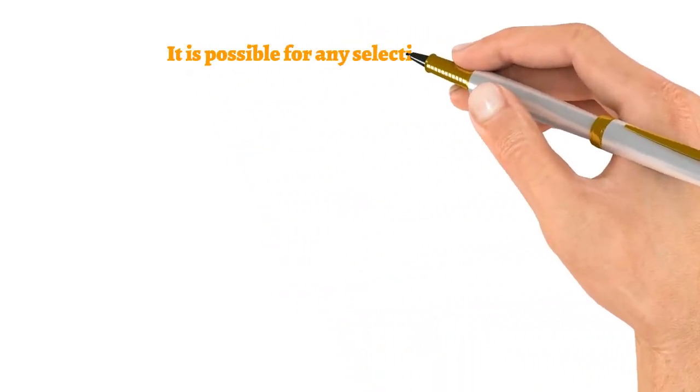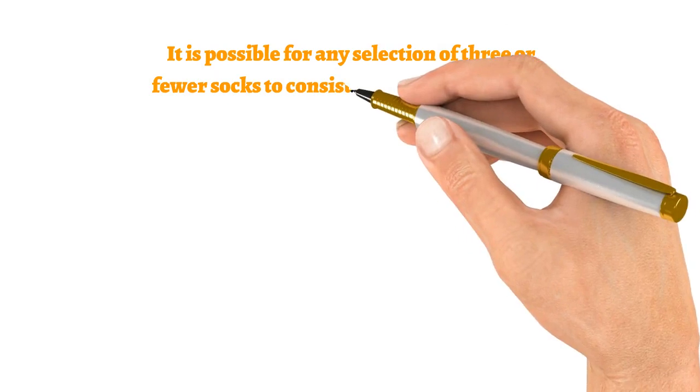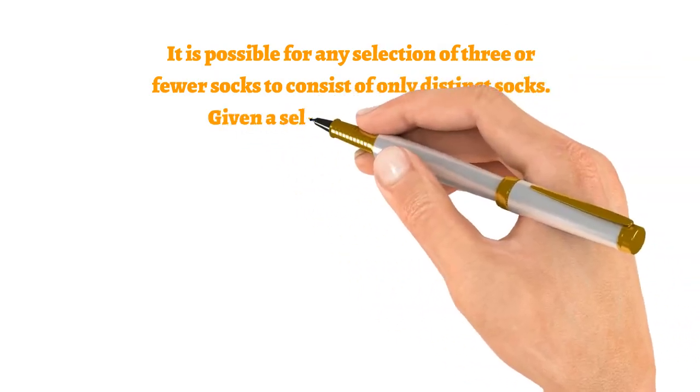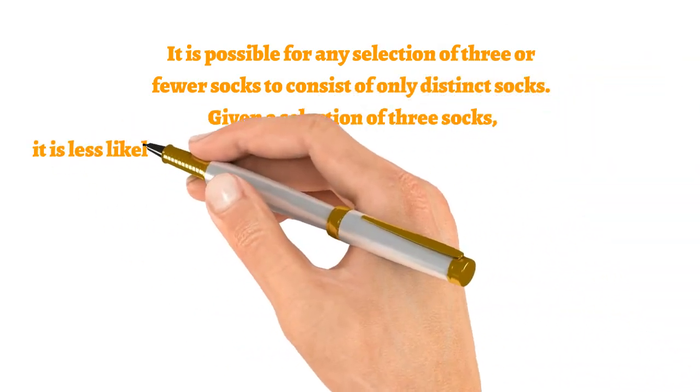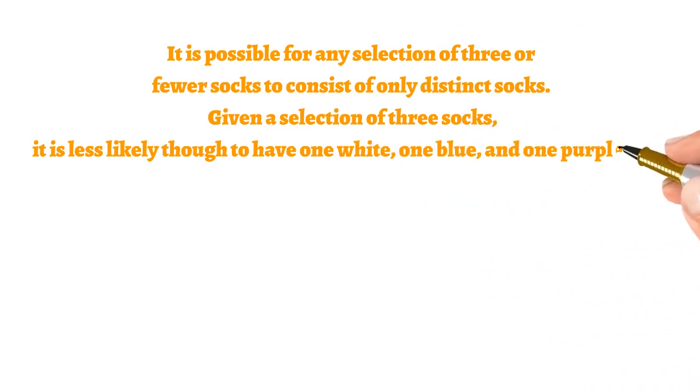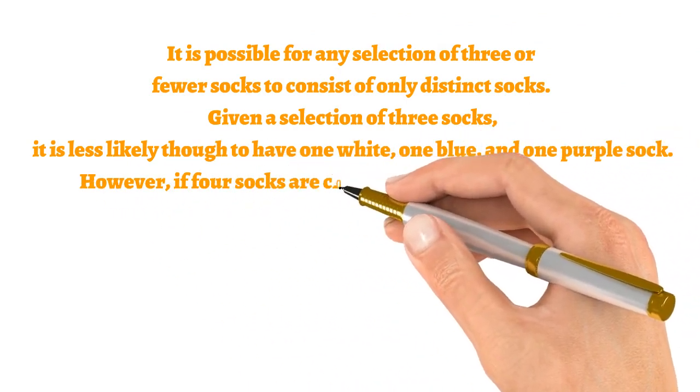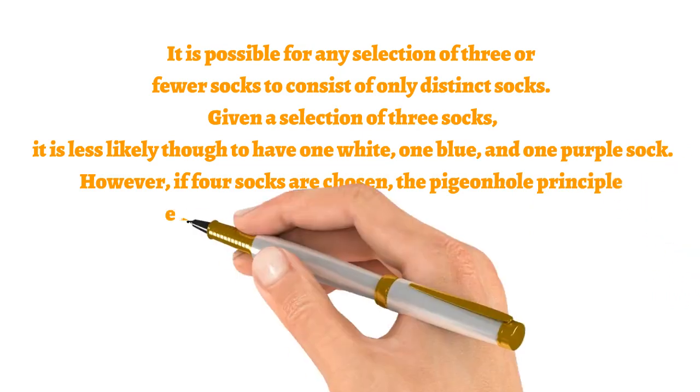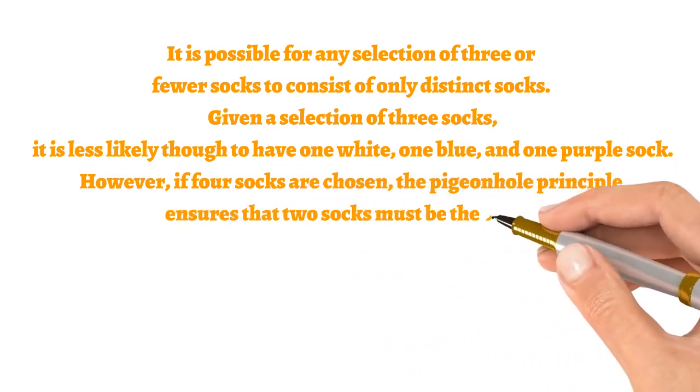It is possible for any selection of three or fewer socks that consist of only distinct socks. Given a selection of three socks, it is less likely though to have one white, one blue, and one purple sock. However, if four socks are chosen, the pigeonhole principle ensures that two socks must be the same.